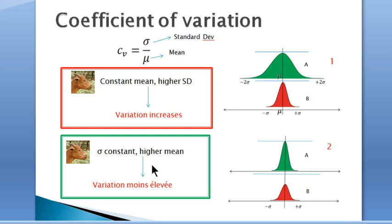Explaining that here, when the standard deviation is constant for both samples and the mean increases, therefore the variation instead decreases.